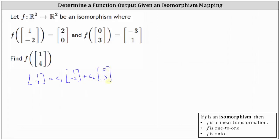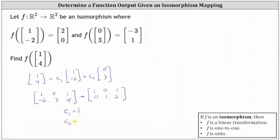Now we need to solve for C₁ and C₂. We'll set up an augmented matrix and write it in reduced row echelon form. Using the first equation, 1·C₁ + 0·C₂ = 1, the first row is (1, 0 | 1). Using the second equation, -2·C₁ + 3·C₂ = 4, the second row is (-2, 3 | 4). The reduced row echelon form gives: first row (1, 0 | 1), second row (0, 1 | 2). So C₁ = 1 and C₂ = 2.